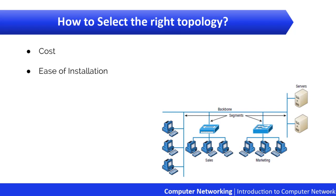Remember that in mesh topology there are a subset of n × (n − 2) connections, so if you implement mesh topology the cost would also go up. Here's a list of things to keep in mind when coming up with the right topology for the right network.